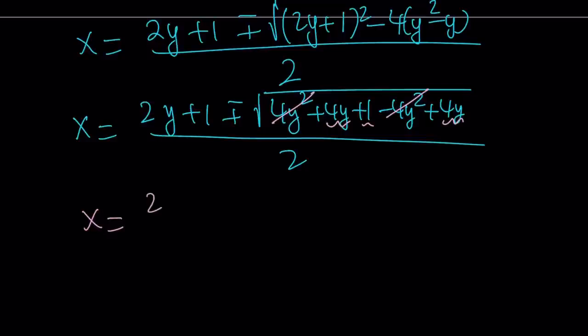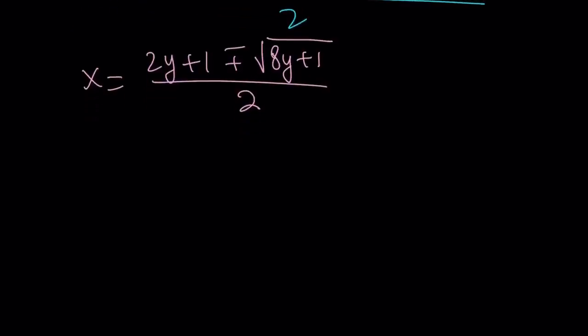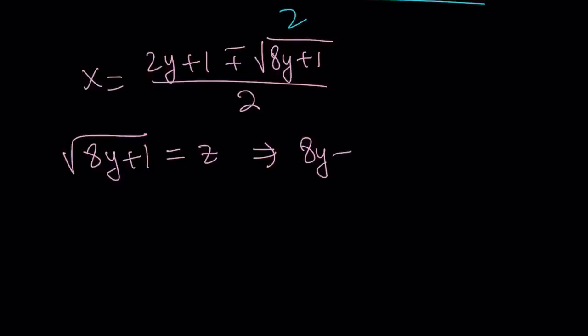So x equals 2y plus 1 plus or minus the square root of 8y plus 1, all divided by 2. Since we're looking for integer solutions, 8y plus 1 needs to be a perfect square — it needs to equal an integer squared. Let's set the square root of 8y plus 1 equal to an integer z, giving us 8y plus 1 equals z squared. Notice that z squared is odd, therefore z is odd; if z were even, its square would also be even.